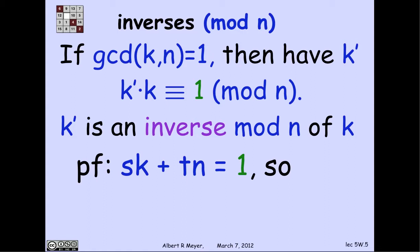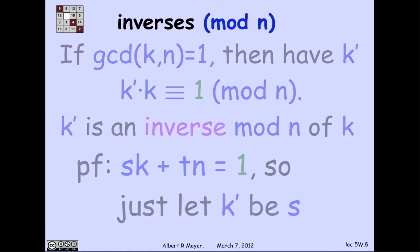But if you stare at that for a moment, what that means is that k' is simply the coefficient s of k. So all you have to do is apply the pulverizer to k and n to get the coefficient s of k in the linear combination of k and n that's equal to 1.